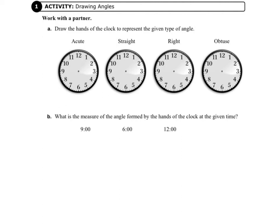Letter A says draw the hands of the clock to represent the given type of angle. So if we look at the first clock, it says we're going to draw an acute angle. There's more than one right answer for this.